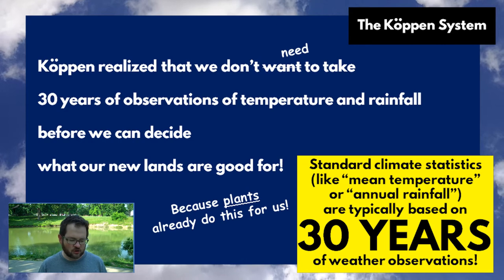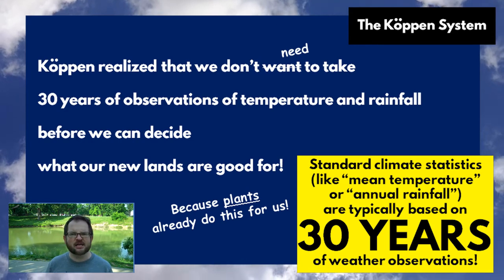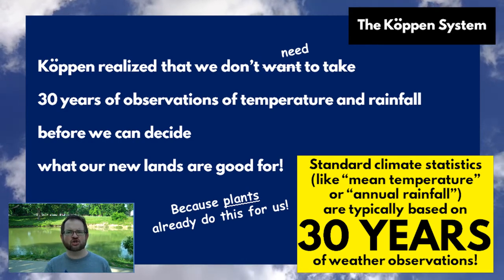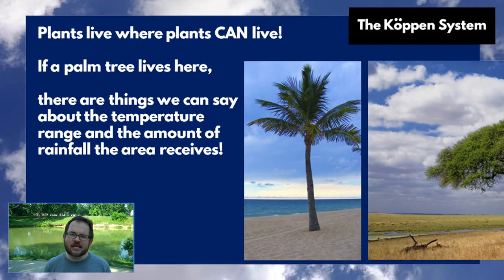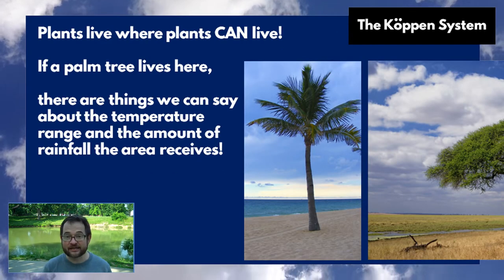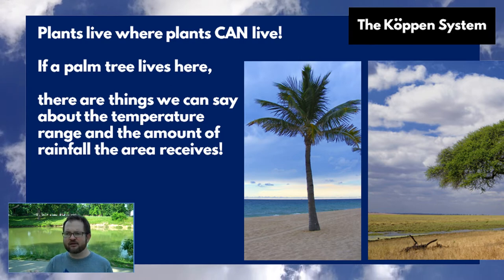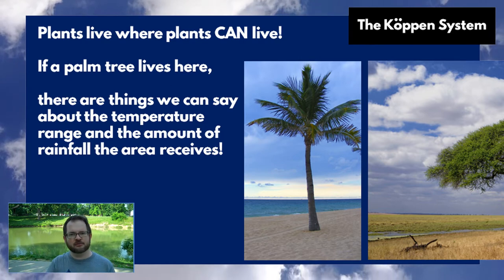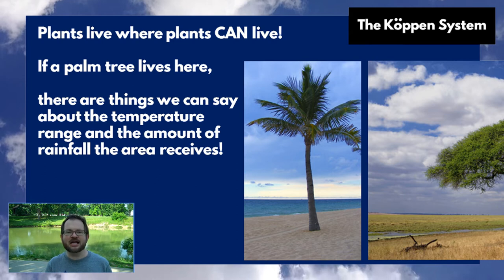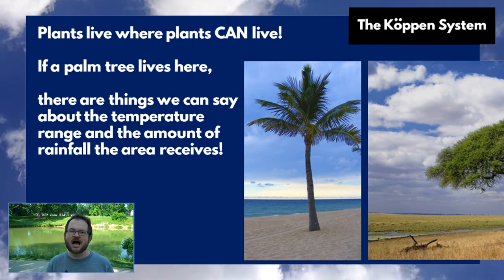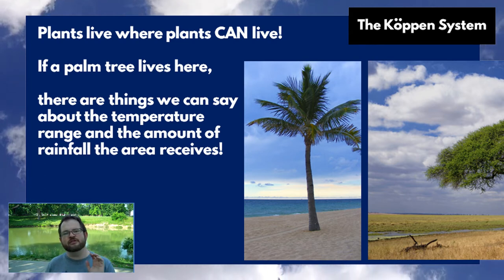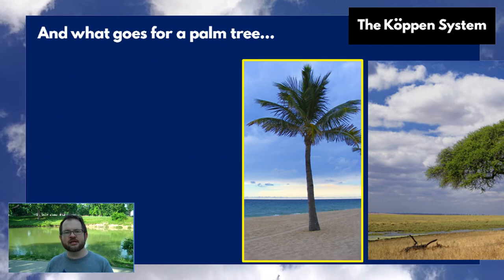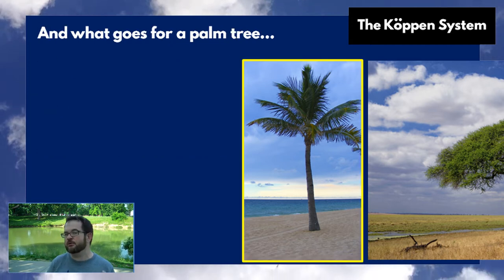Plants that live in a location are already, in many ways, a type of measure of the climate of a region. Plants live where plants can live — they're able to thrive because the climate is right for that kind of plant.